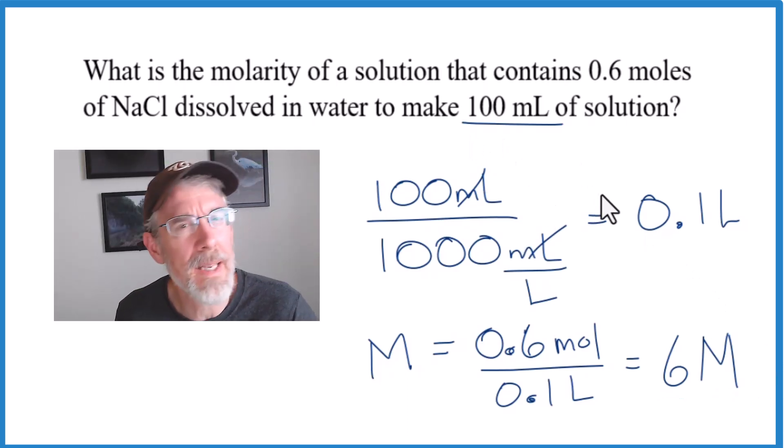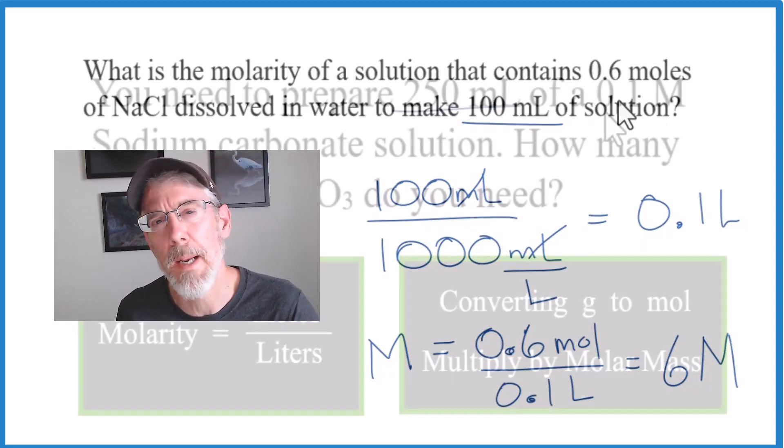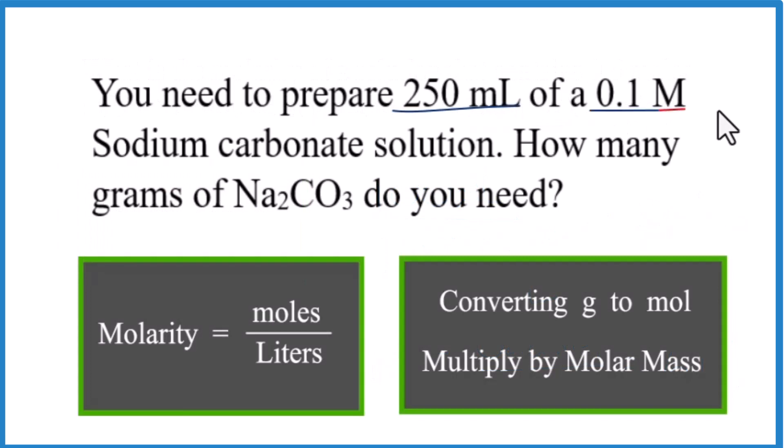Sometimes, just to make it a little bit harder, you'll be given grams instead of moles. So you have to convert from grams to moles. So we want 250 milliliters of a 0.1 molar solution of sodium carbonate. And it asks, how many grams will we need to make this solution? So molarity equals moles over liters. If we could find moles here, we could convert that to grams and we've solved the problem.